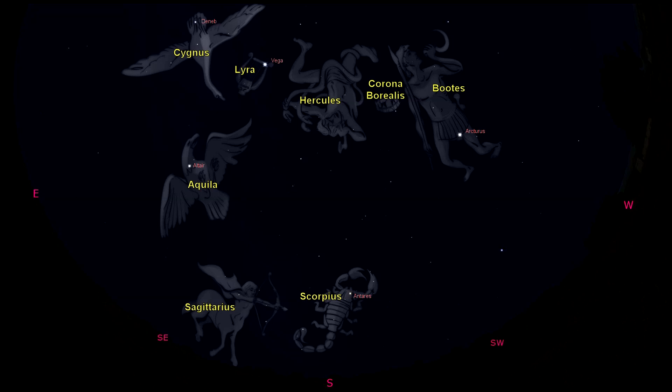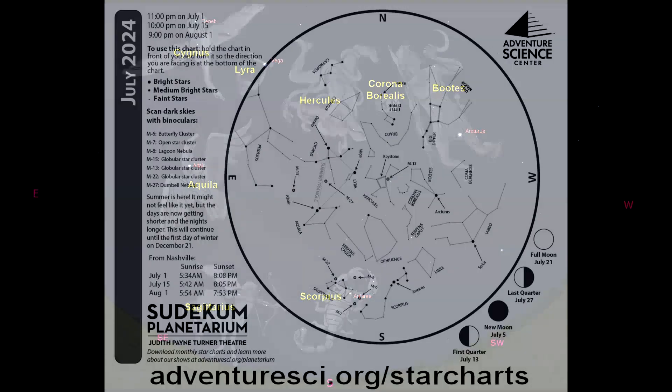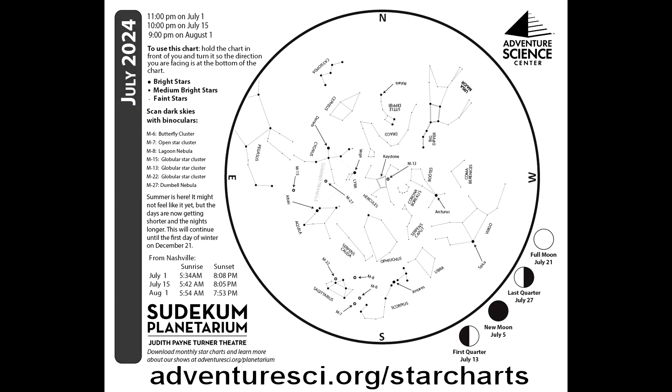And don't forget, if you can't remember everything I've mentioned in this online edition of Nightwatch, you can check out our online star chart. Just go to our website at adventuresci.org/starcharts, and you can download a monthly star chart to find out what's going on in the sky with even a little bit more detail than what I describe here in this online edition of Nightwatch.